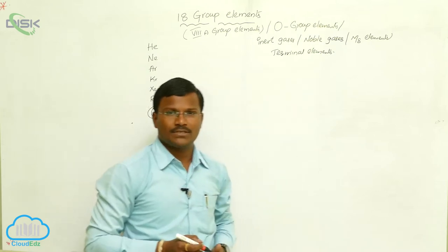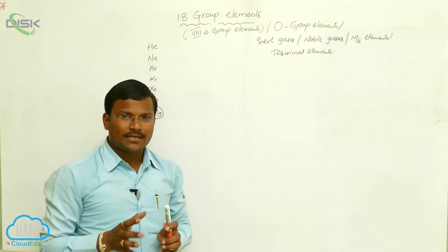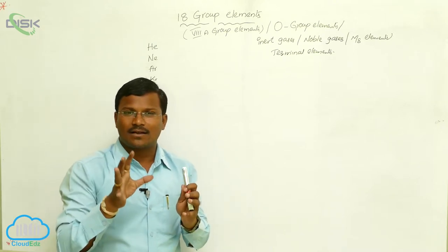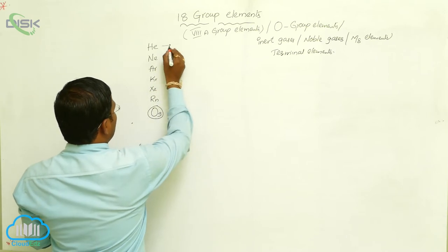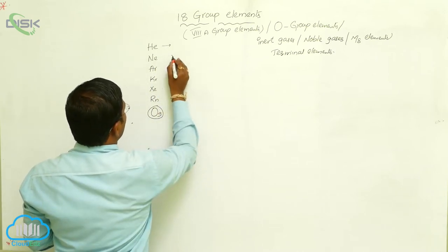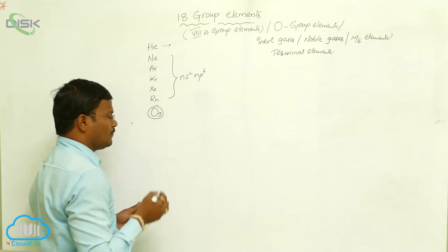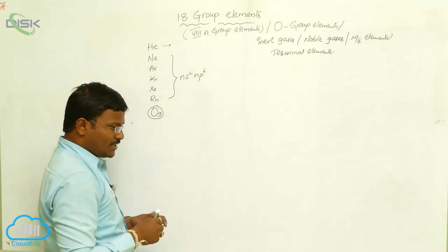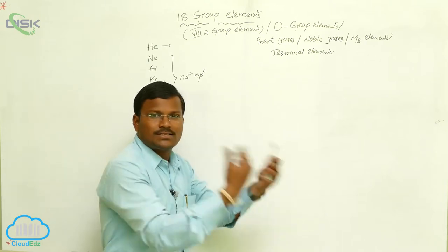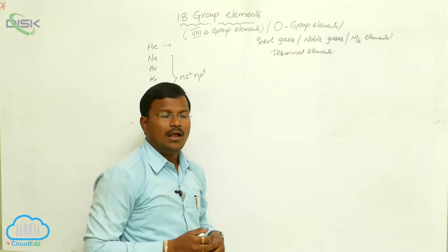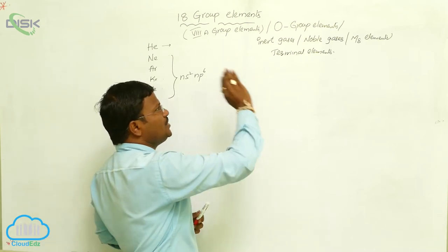Whereas why is it called as 0 group elements? According to octet rule, whatever the atoms or ions which are having 8 electrons in their valency orbit are more stable. Already, except Helium, in Neon, Argon, Krypton, Xenon, Radon and including Oganesson, the number of valency electrons present with these elements are 8. That means, these 18th group elements no need to lose electrons to produce positive oxidation states or no need to gain electrons to provide negative oxidation states. Hence, they are called as 0 group elements.